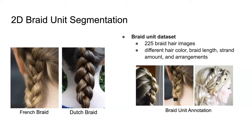Since there is no braid unit dataset available, we created our own. We downloaded 225 braid hairstyle images from the internet, varying in hair color, braid length, strand amount, and arrangement. Then we manually annotated the braid units using a set of polygon points. As you can see in the images, the yellow polygon shows the braid unit.